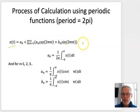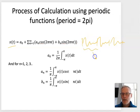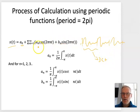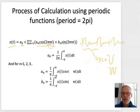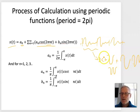So what that means is if you have this type of periodic signal, we can break it down into a DC component — the DC level offset, dictated by a₀ — then a number of cosine components at various frequencies determined by 2πn, and also some sinusoid components of different frequencies. If we add all of these together then we can get our periodic function.